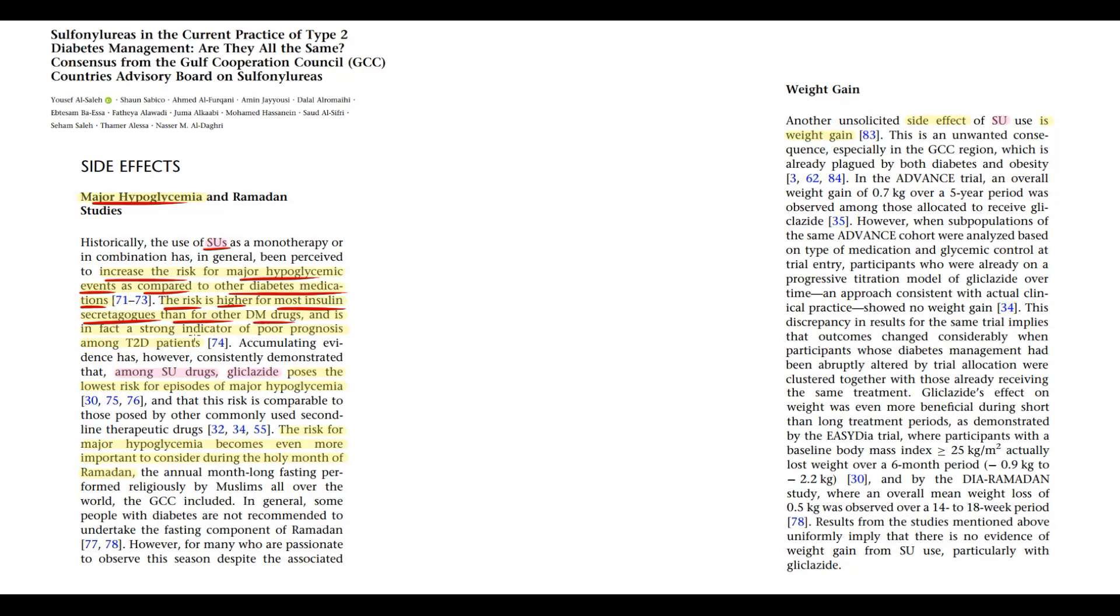Generally, all drugs that stimulate beta cells to produce more insulin have a higher risk of hypoglycemia. It's important because major hypoglycemic episodes are considered a strong indicator of poor prognosis among diabetic patients. Among sulfonylureas, gliclazide has the lowest risk of major hypoglycemic episodes. The patients where hypoglycemia as a side effect becomes extremely important are Muslims during Ramadan. Because prolonged fasting combined with increasing glucose uptake due to high insulin level can easily cause hypoglycemia.